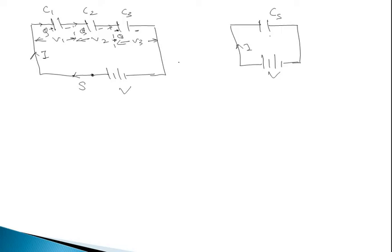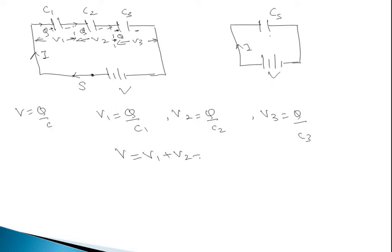Since the voltage for each capacitor is different, we use the basic formula V = Q/C. Taking this formula into consideration, we get: V1 = Q/C1, V2 = Q/C2, V3 = Q/C3. From the diagram we get the equation V = V1 + V2 + V3. This total V can be written as Q/Cs, where Cs stands for capacitor in series.